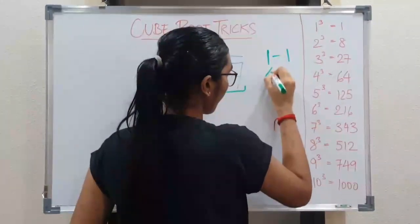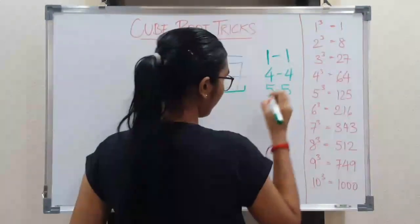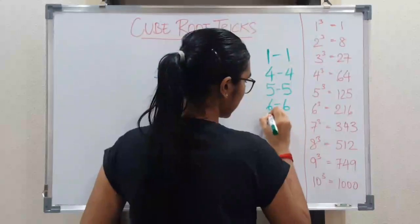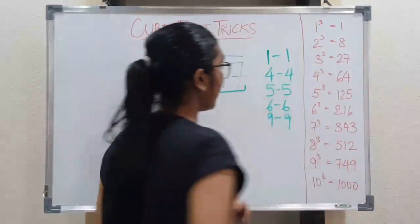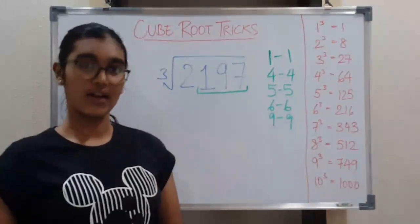Number 1 ends at 1, 4 ends at 4, 5 ends at 5, 6 ends at 6, and 9 ends at 9. So these numbers are very easy to remember because they end at the same number as they are.